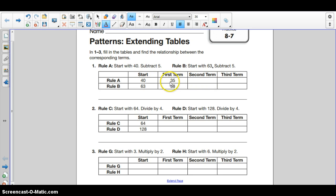We start here, 35, we subtract 5, that becomes 30. Let me make that a little bit bigger so you can see. And then we subtract 5 from 30, that will give us 25.